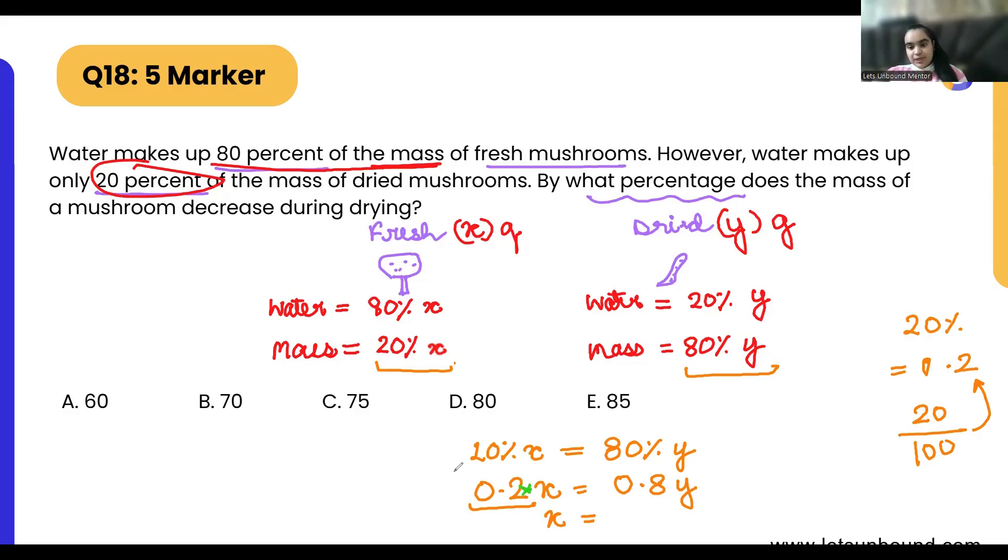Now we can see in both the numbers decimal point is exactly at the same place, before one digit. So we can cancel it out. Now simply the question is 8 divided by 2, that is 4y. So we got from here that x is equals to 4y.